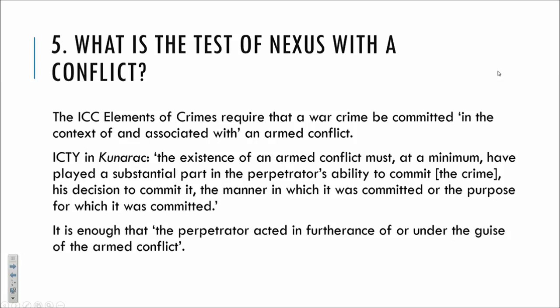Kunarac further says it is enough that the perpetrator acted in furtherance of, or under the guise of, the armed conflict. This tells us that acting under the colour of authority — acting with the de facto power you have as a combatant over civilians or POWs — would be enough to tie your crime to the armed conflict. It also tells us that an ordinary murder between two feuding neighbours that just happened to be committed during an armed conflict, or was made easier by a breakdown in law enforcement, would not of itself be a war crime, because it hasn't been done to further or under the guise of the armed conflict.